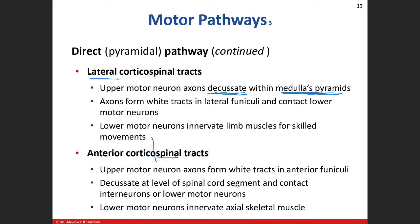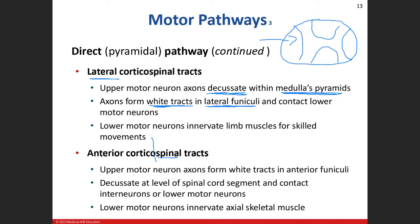After crossing over in the medulla, the lateral corticospinal tract runs in the white matter of the lateral funiculi. The lateral funiculus is white matter on the side of the spinal cord, compared to the posterior and anterior funiculi. It then synapses on or contacts the lower motor neurons. The lateral corticospinal tract innervates limb muscles - that's important to know.